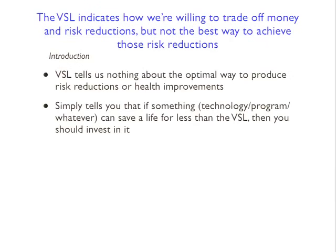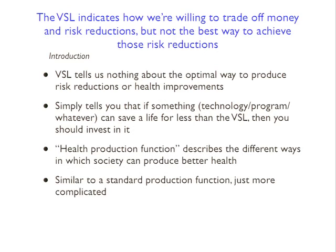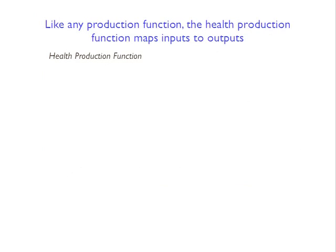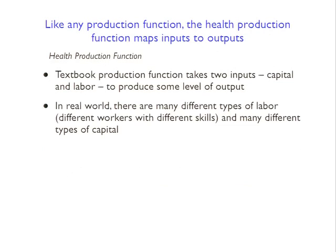The good we're talking about here is decreases in risk or increases in safety, and we've measured how much people are willing to pay for that. But that doesn't tell us what the best ways for society to reduce risk or increase safety are. So the health production function describes different ways society can potentially produce better health and safety. It's similar to a standard production function but more complicated. Like any production function, it maps inputs to outputs. A textbook production function takes two inputs - capital and labor - and produces output; in reality there are many different types of each.